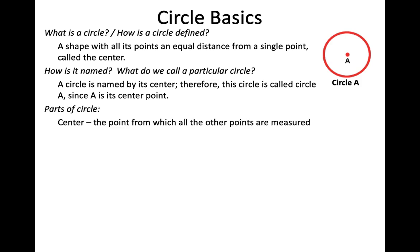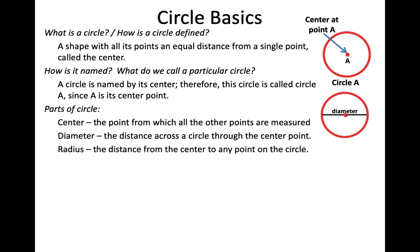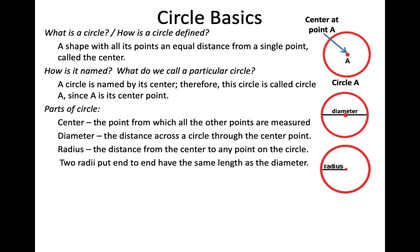A circle has several parts. The center is the point from which all the other points are measured. It has a diameter — the distance across the circle through the central point, essentially cutting the circle in half. The radius is the distance from the center point to any point on the circle — that equidistant distance. If you put two radii together back to back, it is the same thing as a diameter.